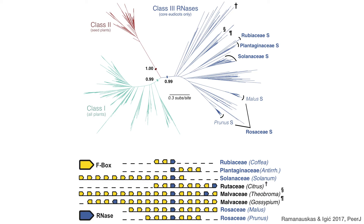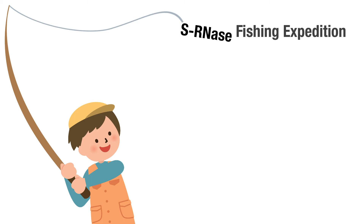And last year, Liang et al. published a paper in Nature Plants in which they characterized the genetic basis of self-incompatibility in at least some citrus species, which is indeed of the RSI type. Thus, we are left a trail of crumbs with the expression of these particular RNases, their genomic context, and some other information that we thought we could use. So we decided to conduct a fishing expedition looking for SRNases across eudicots.